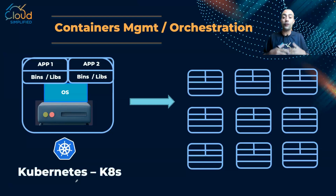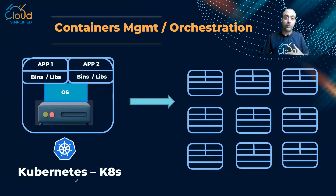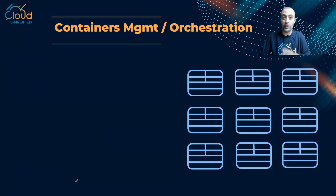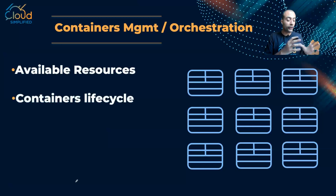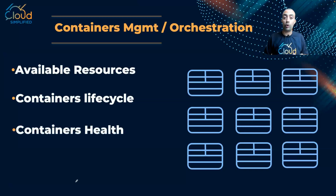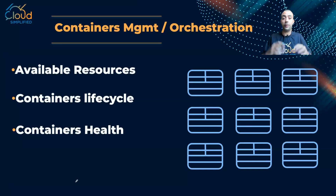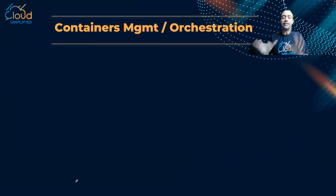Kubernetes is the software platform I use to orchestrate and manage my containers. What does management or orchestration do? First, it detects available resources on servers to deploy new containers. It also maintains the container lifecycle — launching new containers or terminating containers I no longer need. Finally, it detects container health: if a container is unhealthy, it terminates it and launches a new one.